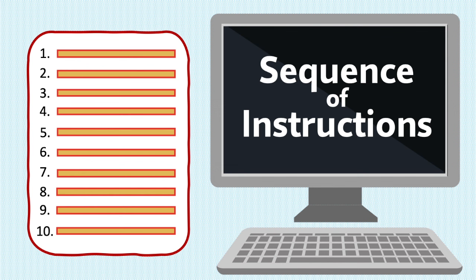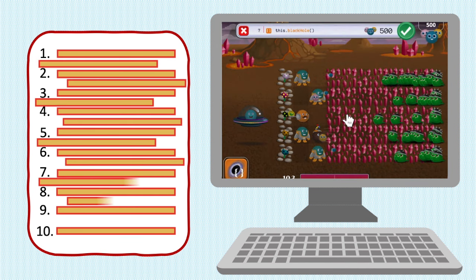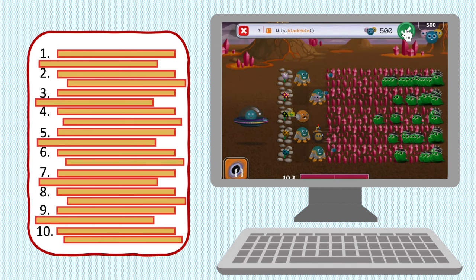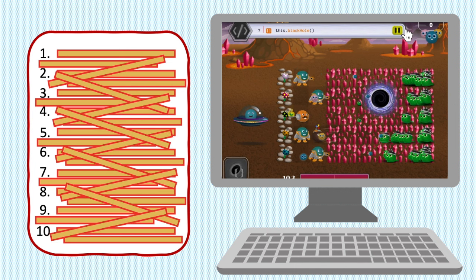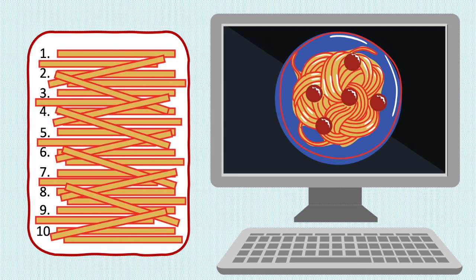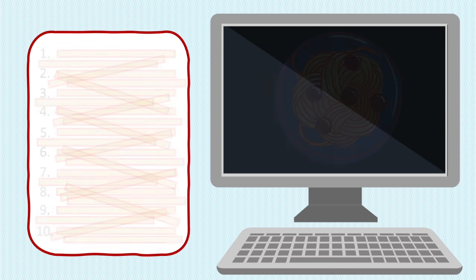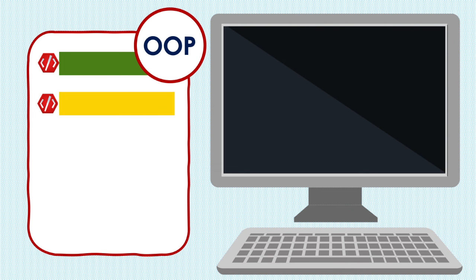But what if you want to write a program for something really big and complex, like a game? Game code can be a few thousand to millions of lines of code long. Without any clear organization, your list of instructions would end up all jumbled, like a plate of spaghetti — with so many intertwined noodles it would be nearly impossible to pull one out without disrupting the others.